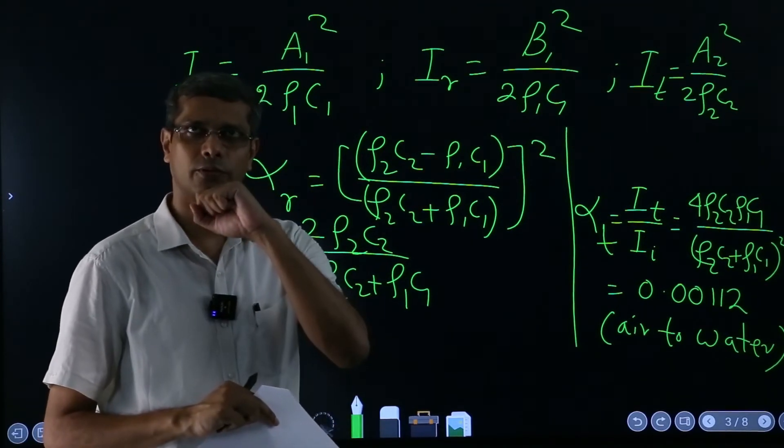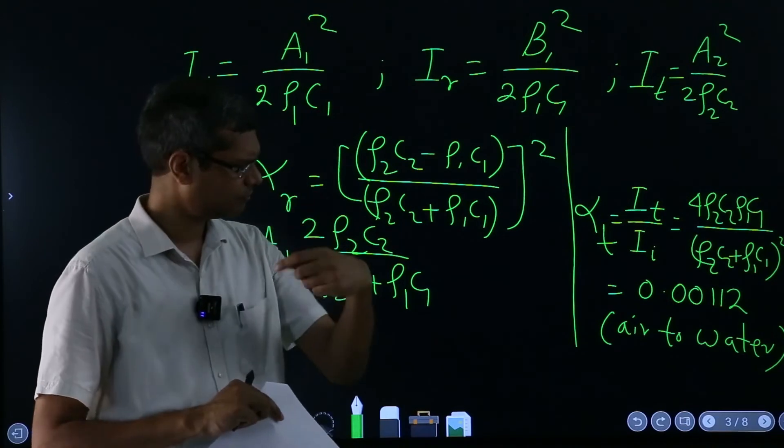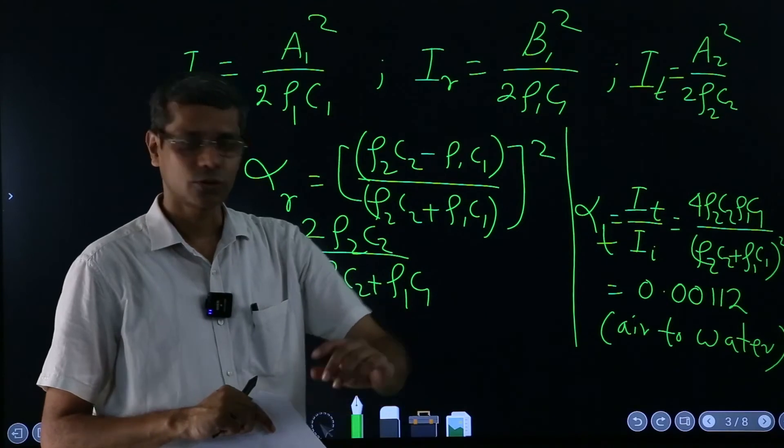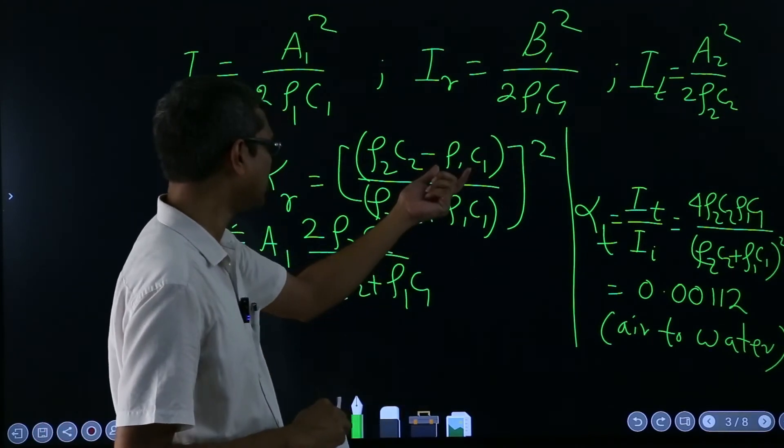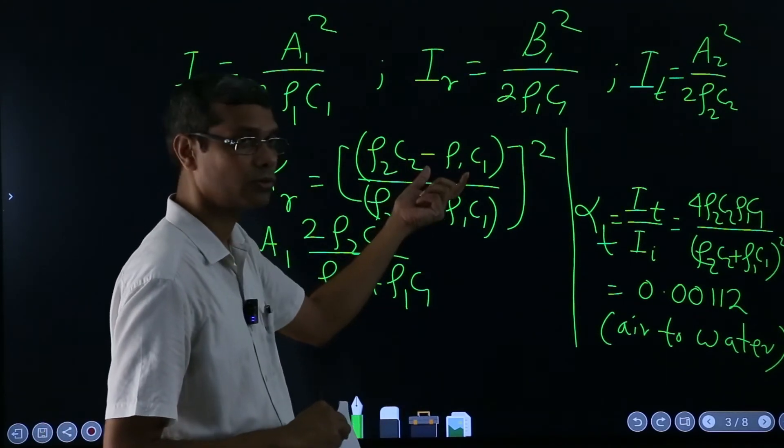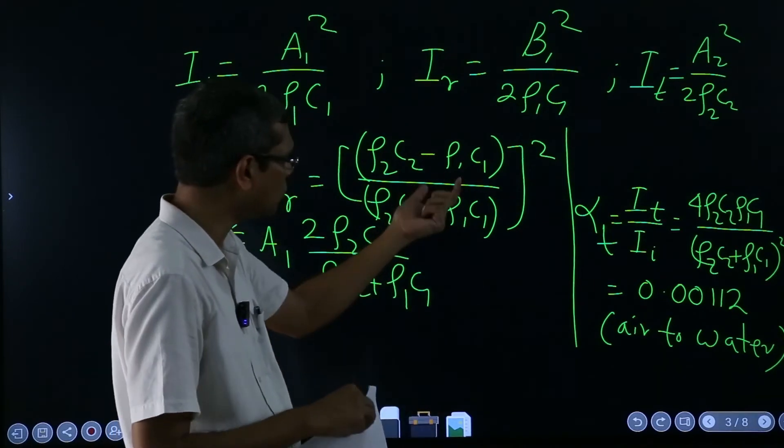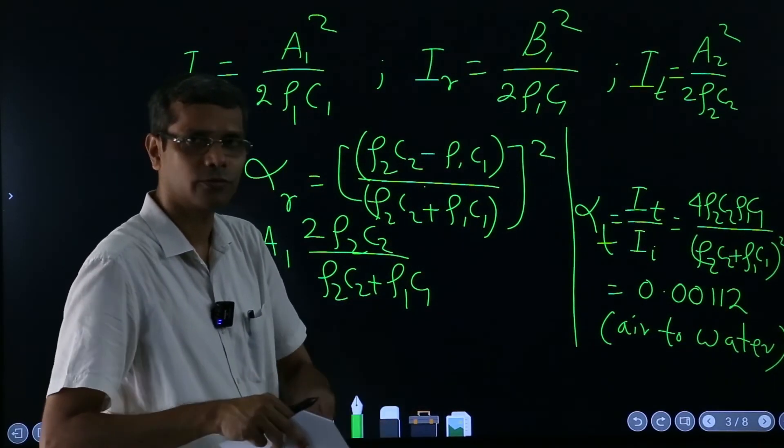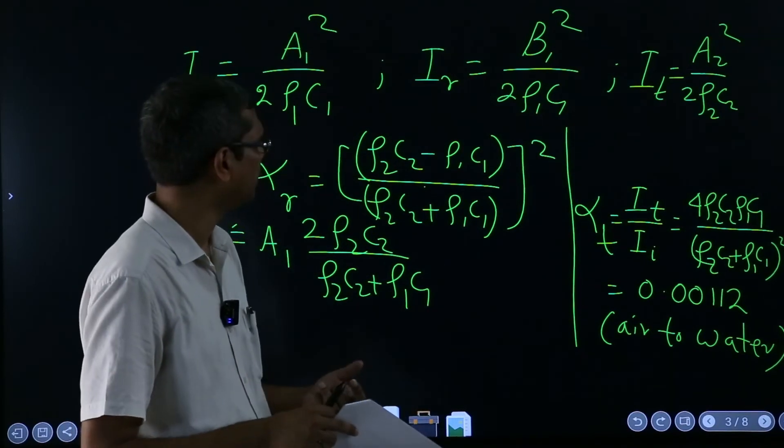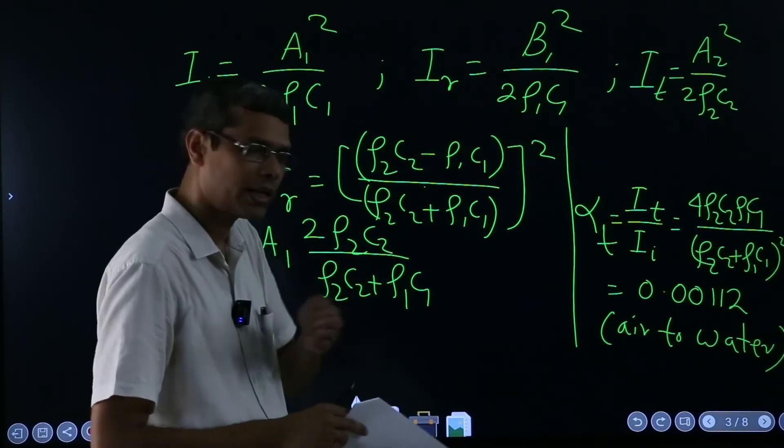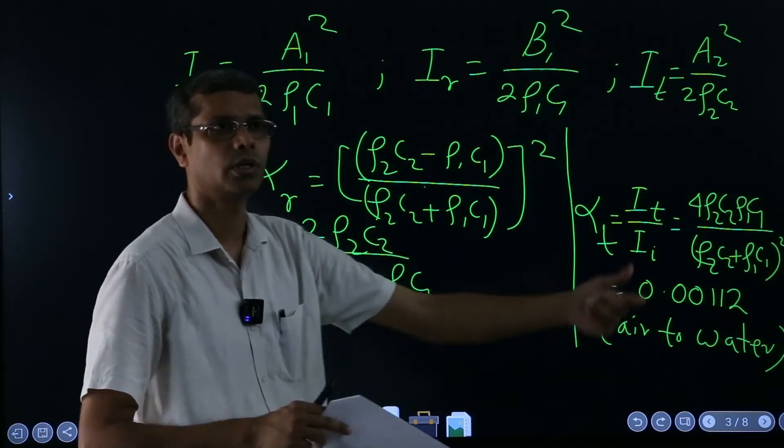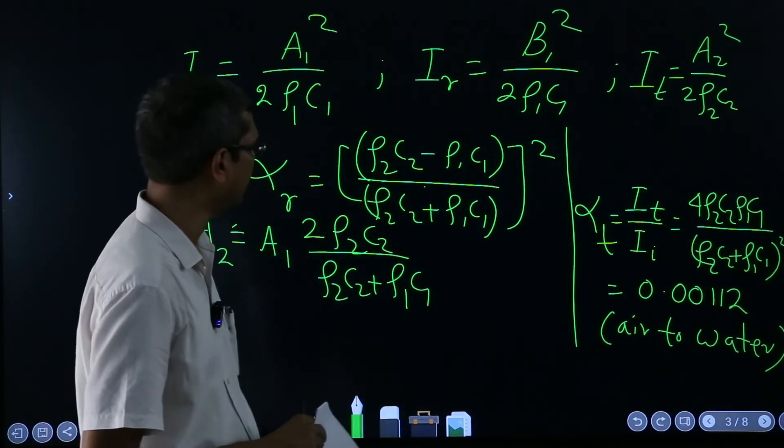So I was giving the example of that ultrasound, right, when you put that gel. So that is actually doing some sort of thing, for matching the impedances, the ρ₁c₁ value it tries to match with that of the human flesh. So that maximum energy can be transferred from the ultrasonic transducer to the body, okay.